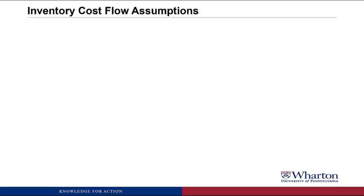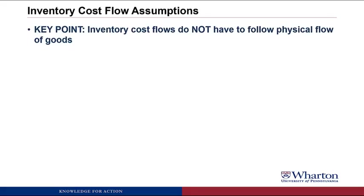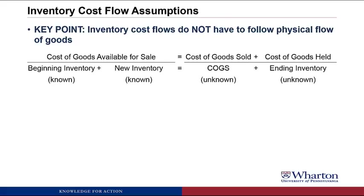We have to start out with a key assumption. And if you don't keep this assumption straight, you're going to be confused for much of the rest of this video. The key assumption is that the inventory cost flows do not have to follow the physical flow of goods. So what I mean by this is if we remember the inventory equation where we have beginning inventory plus new inventory, that has to equal cost of goods sold plus ending inventory.